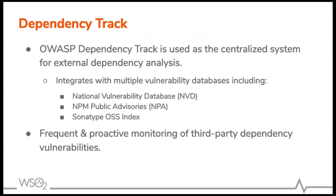Dependency Track is used as a centralized system for tracking external dependencies. This tool will talk to the National Vulnerability Database (NVD), NPM public advisories, and Sonatype OSS index to identify vulnerabilities of third party libraries. Dependency Track will also monitor these indices daily to see if there are any new security issues being added. If so, it will generate email alerts to the security team so that we can take necessary actions.